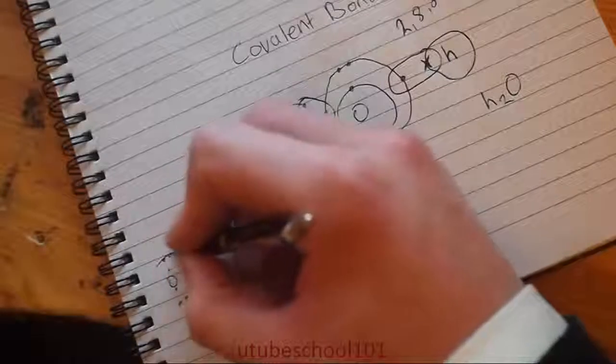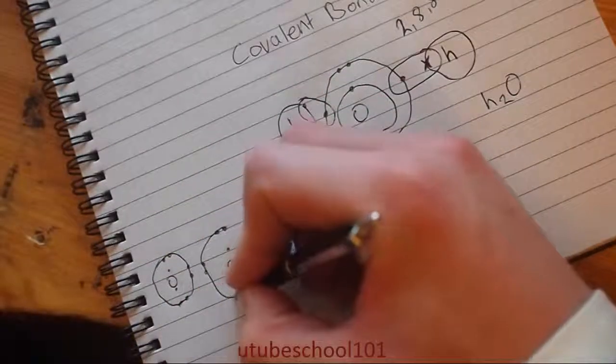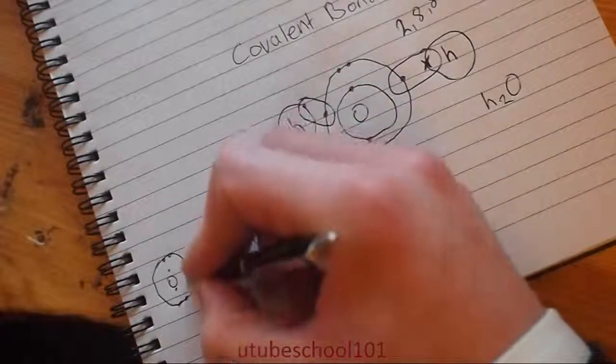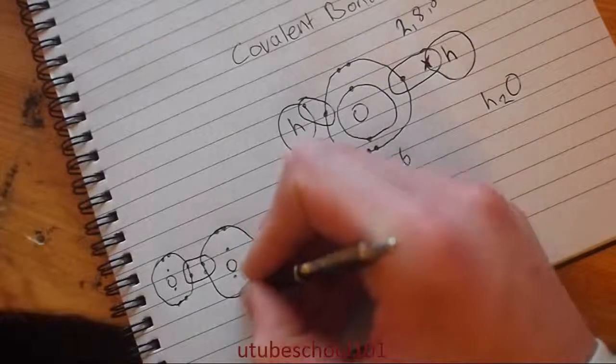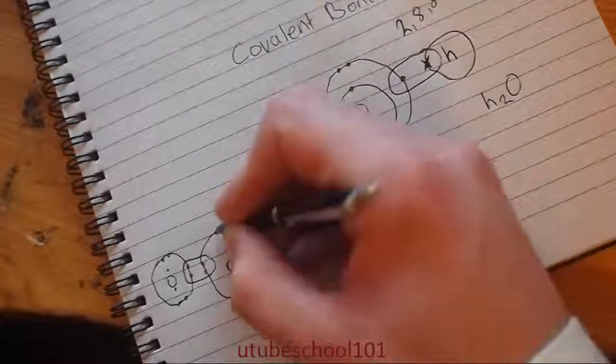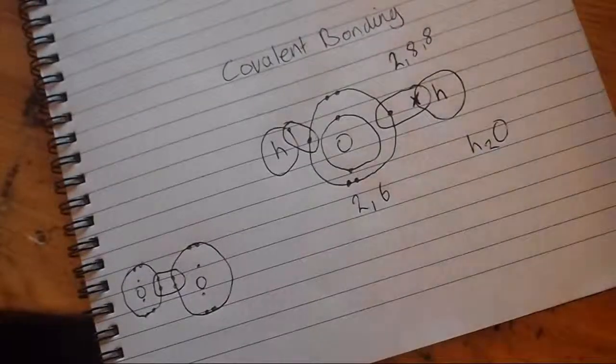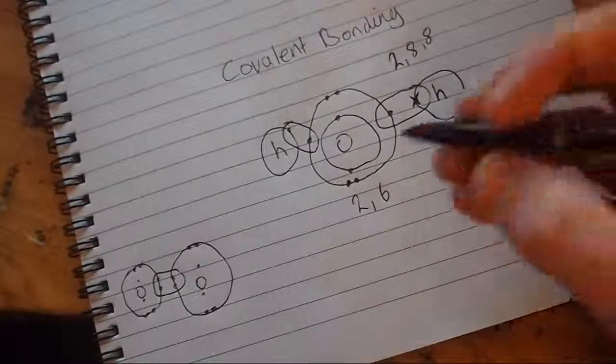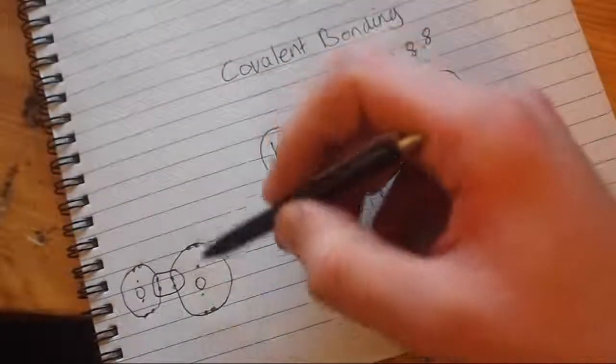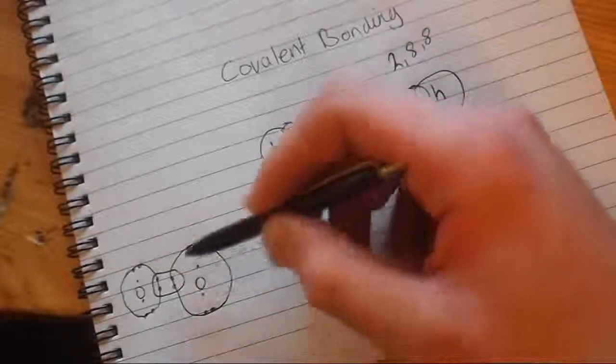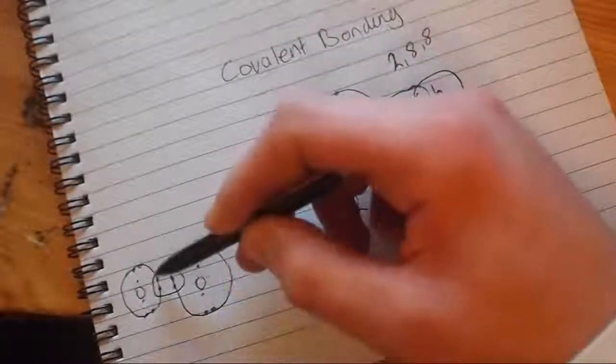So you can have double bonds. I'll just draw the outer shell here. So you can see on the outer shell this oxygen here on the right has one, two, three, four, five, six, seven, eight. And we can see the oxygen here has eight electrons. Even though it has not transferred any, it's just sharing them.